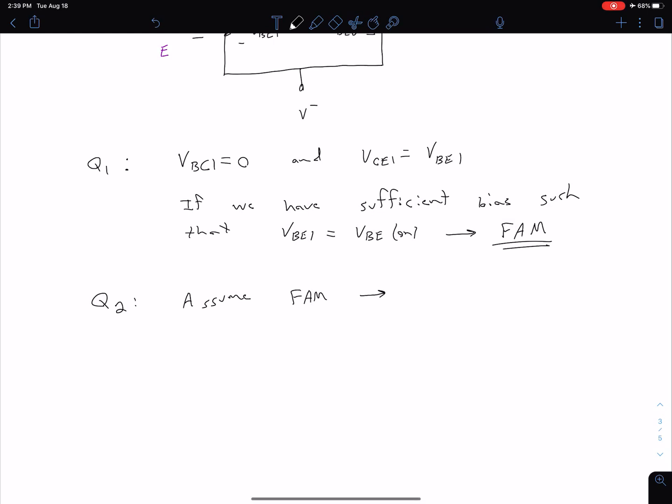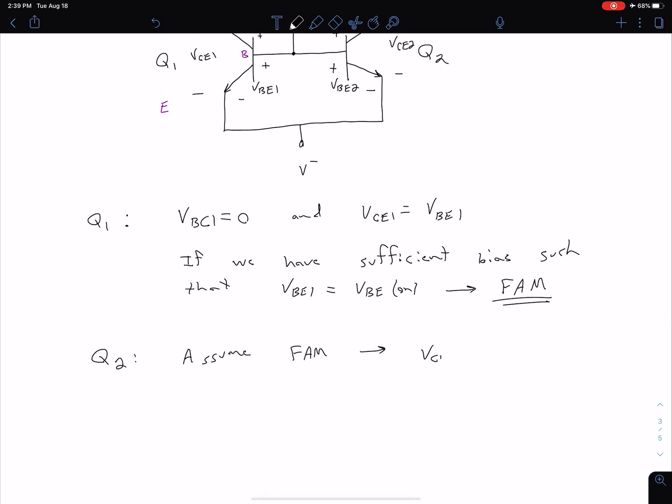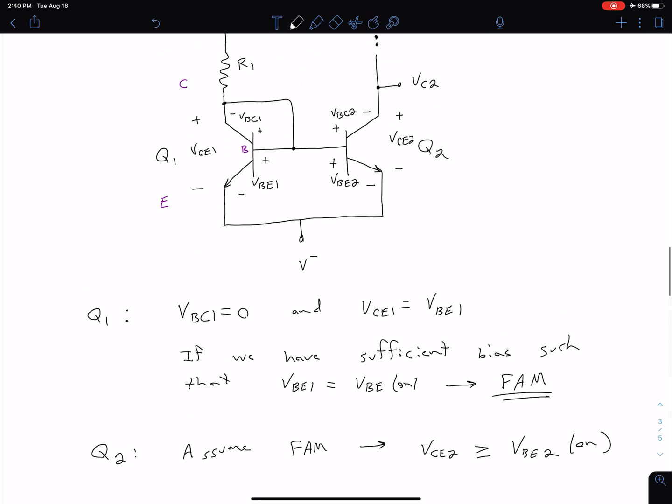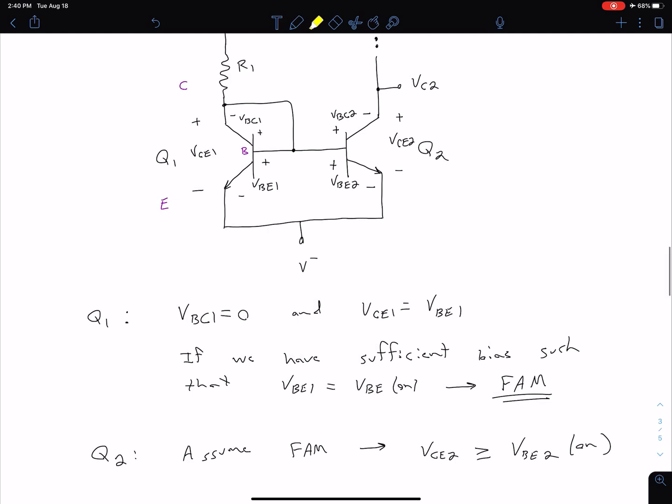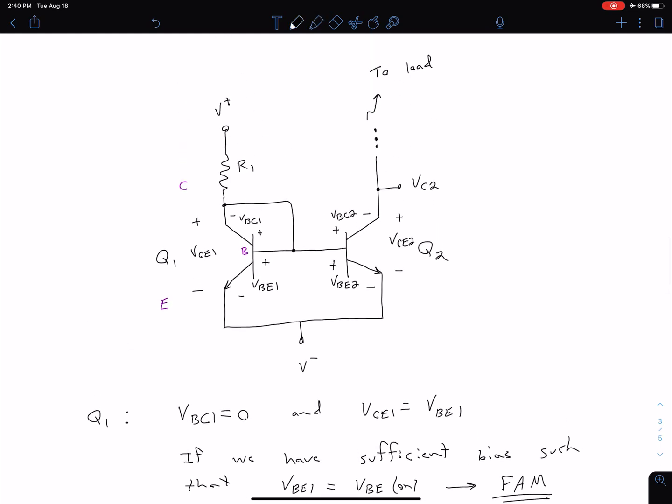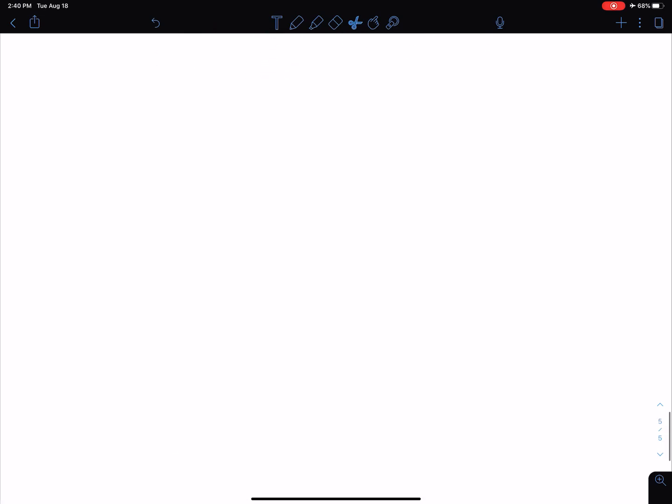We're going to assume forward active mode. What that's going to mean is that our VCE2 has to be greater than or equal to our VBE2, which has to be turned on. Basically, this VCE2 voltage has to be large enough such that our VBC2 voltage is negative or zero. If all of that is true, then we can analyze our circuit with our I-V equations from a previous class. Let me bring this circuit down here.